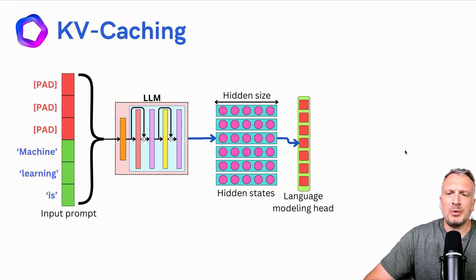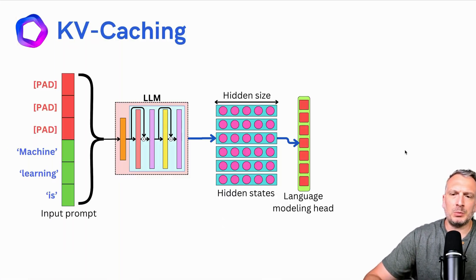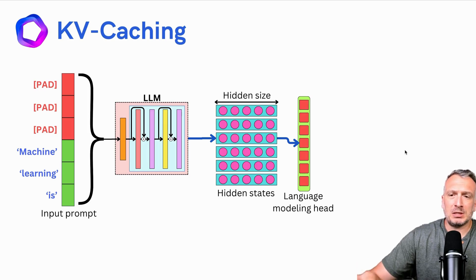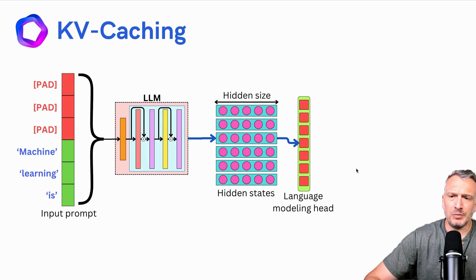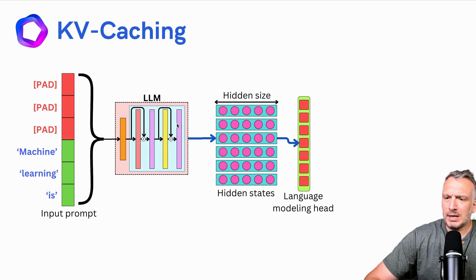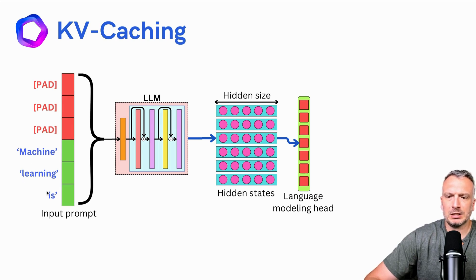If you are building an application that is supposed to decode text, there's a simple optimization that you can do to really increase the speed of the application. This is called KV caching. So let's look at this example. We have an input prompt: 'machine learning is.'